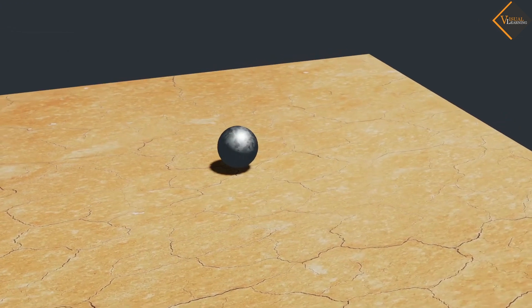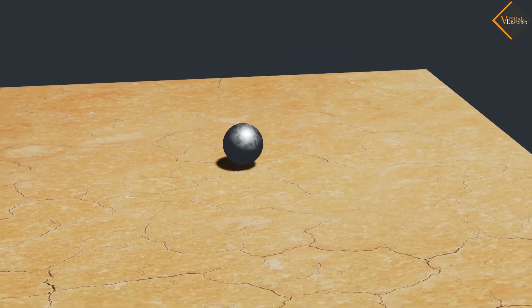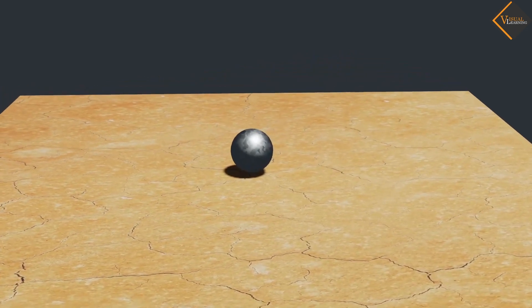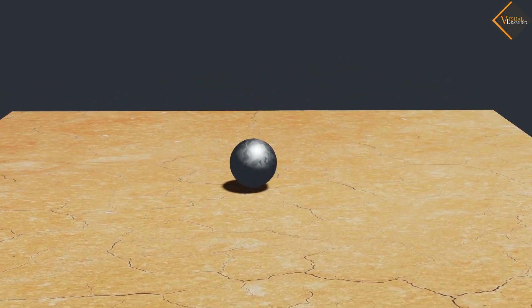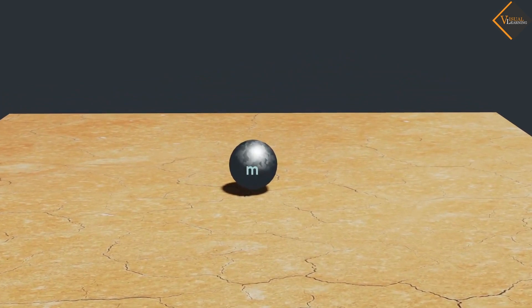To understand this law, let us consider that a ball is placed at the ground. This ball has mass m and it is stationary at the moment.